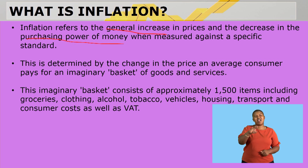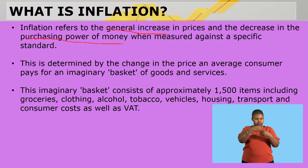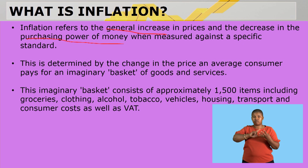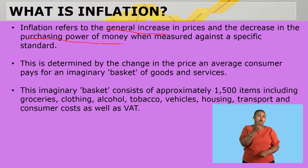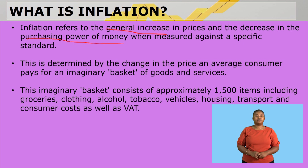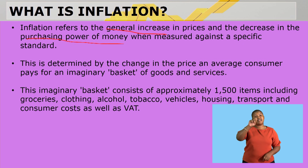This imaginary basket consists of approximately 1,500 items including groceries, clothing, alcohol, tobacco, vehicles, housing, transport and consumer costs as well as VAT. So inflation is an imaginary number that shows you, according to the needs and the stuff we buy and services we look at, what the general price increase is going to be.